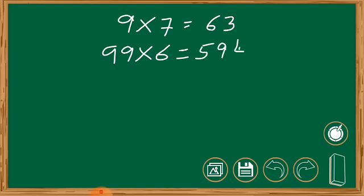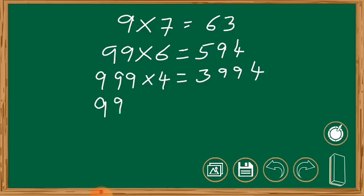How am I getting the answer? I will explain you next. 999 into 4, let us take. What will be the answer? You will get 3996. You can do this all in a fraction of a second.